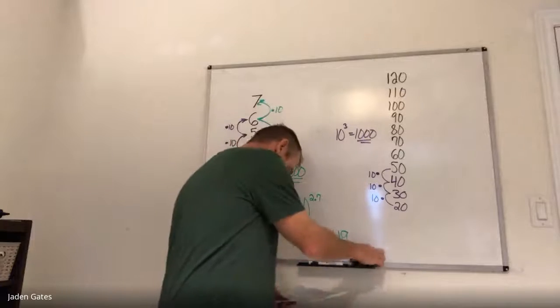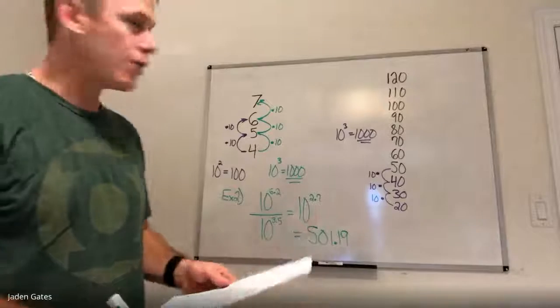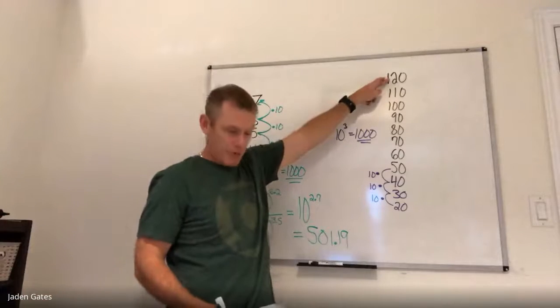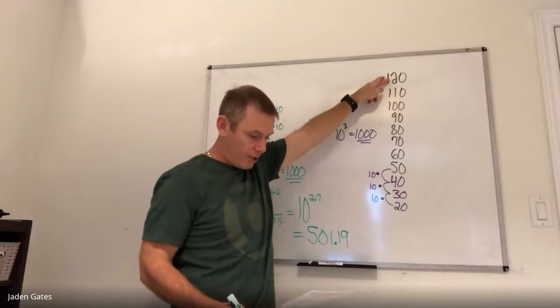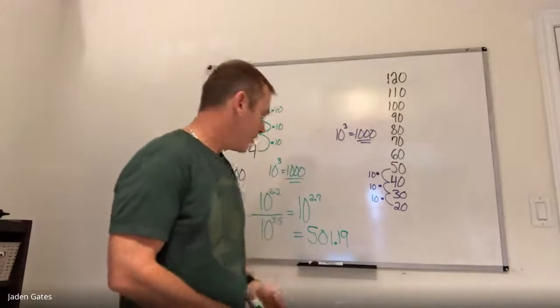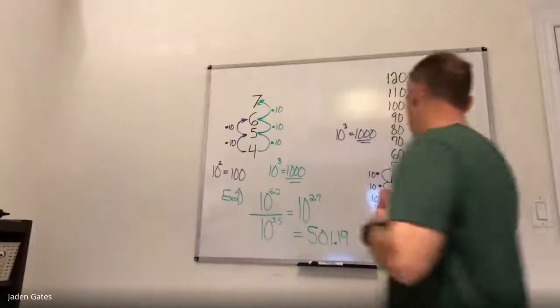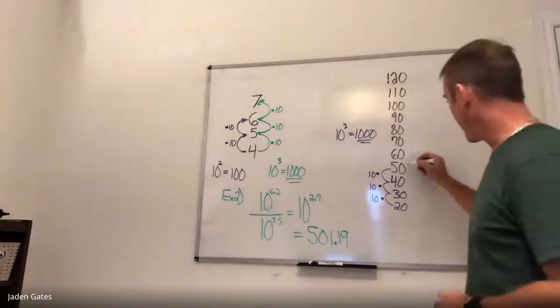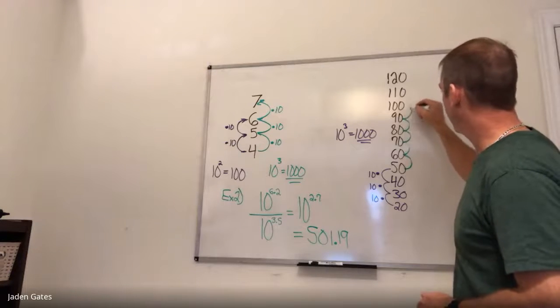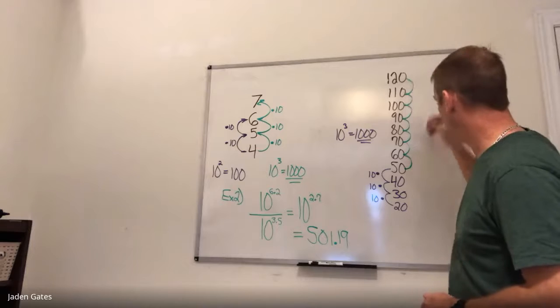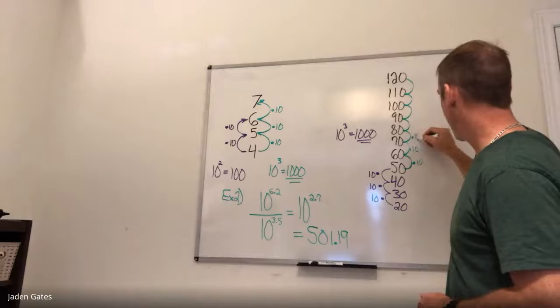Then we can also compare a rock concert, which is a 120 decibels, right at the top here, to an ordinary conversation, which again is 50. So again, I compare a 50 to a 120 in the scale for a decibel scale goes up by 10. So I'm going one, two, three, four, five, six, seven times by 10 each time.